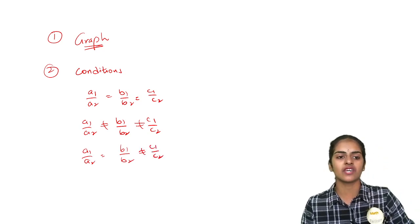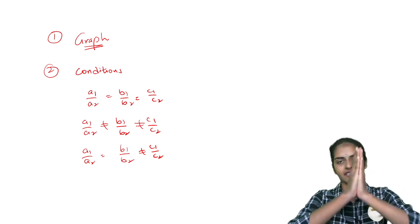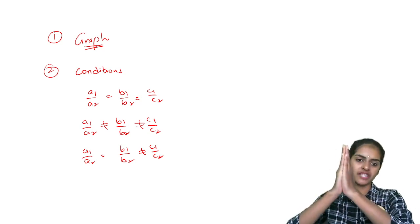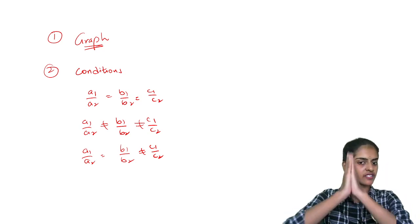If A1 by A2, B1 by B2, C1 by C2 all are equal, then the lines are coincident. They are one above the other, they are coincident. A1 by A2 equal to B1 by B2 equal to C1 by C2, the lines are coincident.